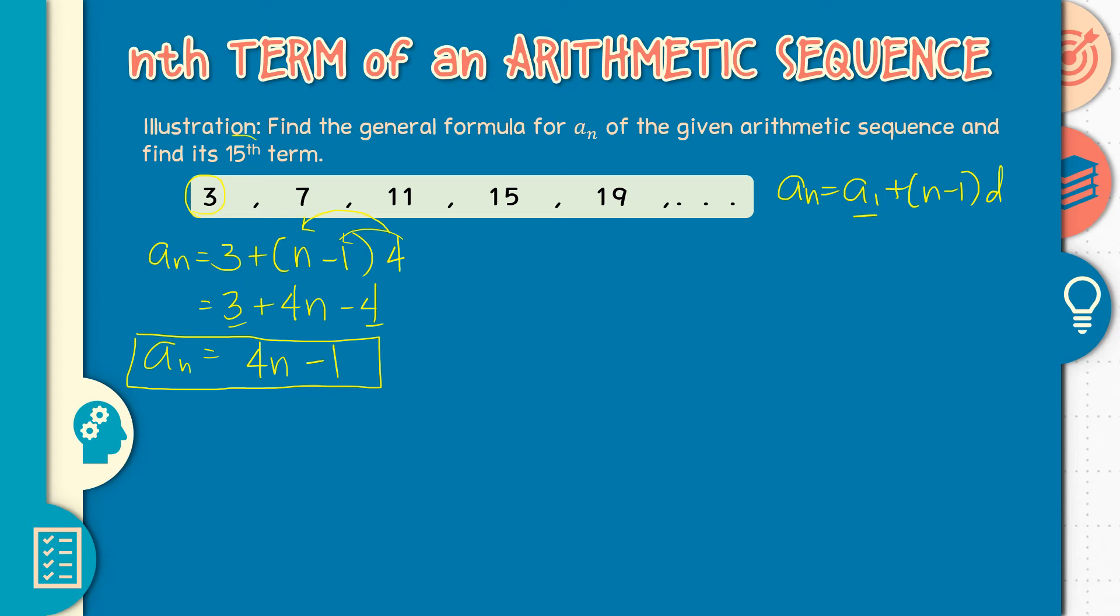Now there is another question and we are asked to find for the 15th term. Hanapin daw natin yung ika-15. So lahat ng n papalitan natin ng 15. We have 4 times 15 minus 1. 4 times 15, 60, minus 1, 59. Okay, so ang ika-15 na term is 59. So that is an arithmetic sequence for the nth term. So gano'n lang siya ginagamit. Pag hinanap ang rule, ganito ang gagawin. Kapag hinanap yung nth term, yan, papalitan lang yung n.